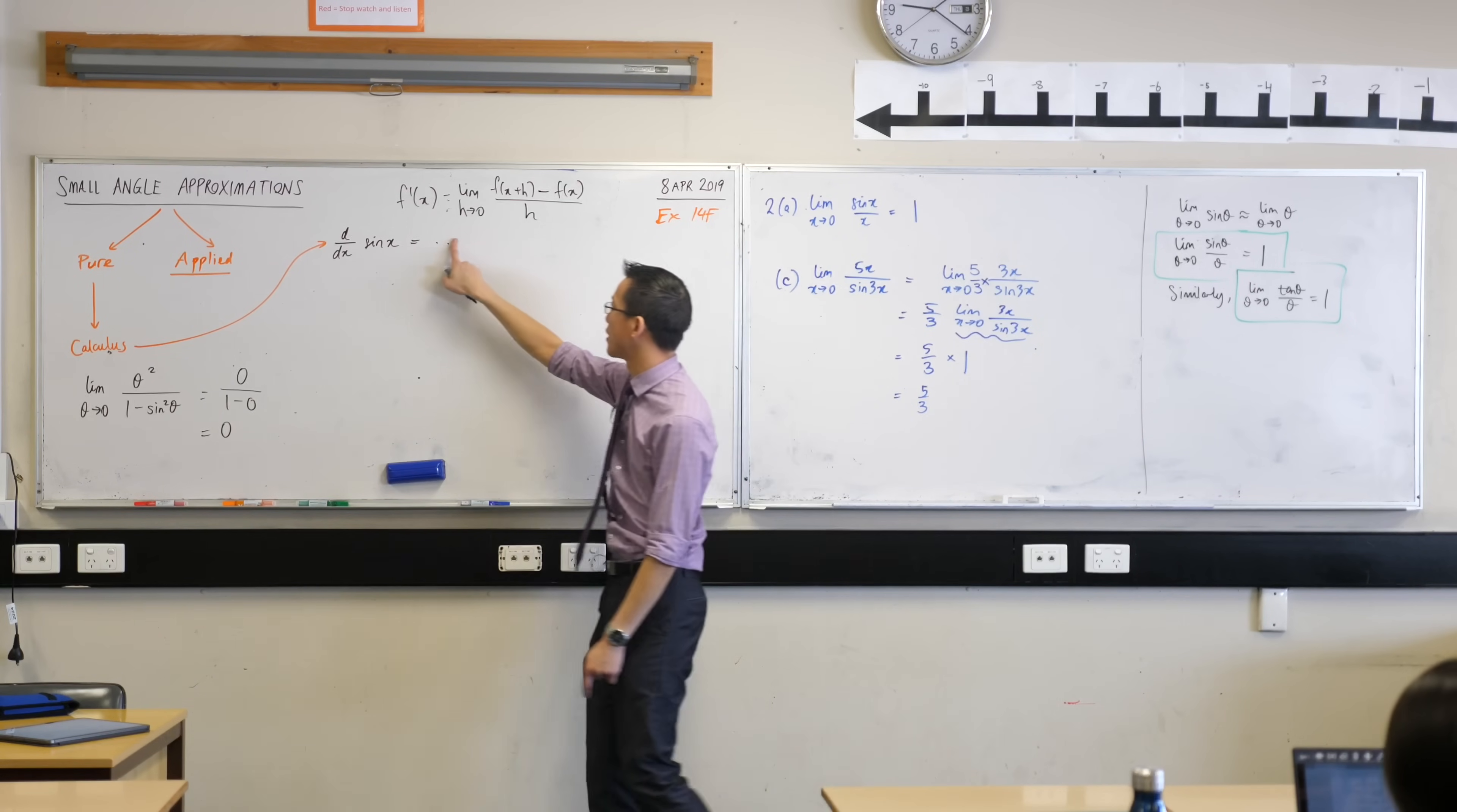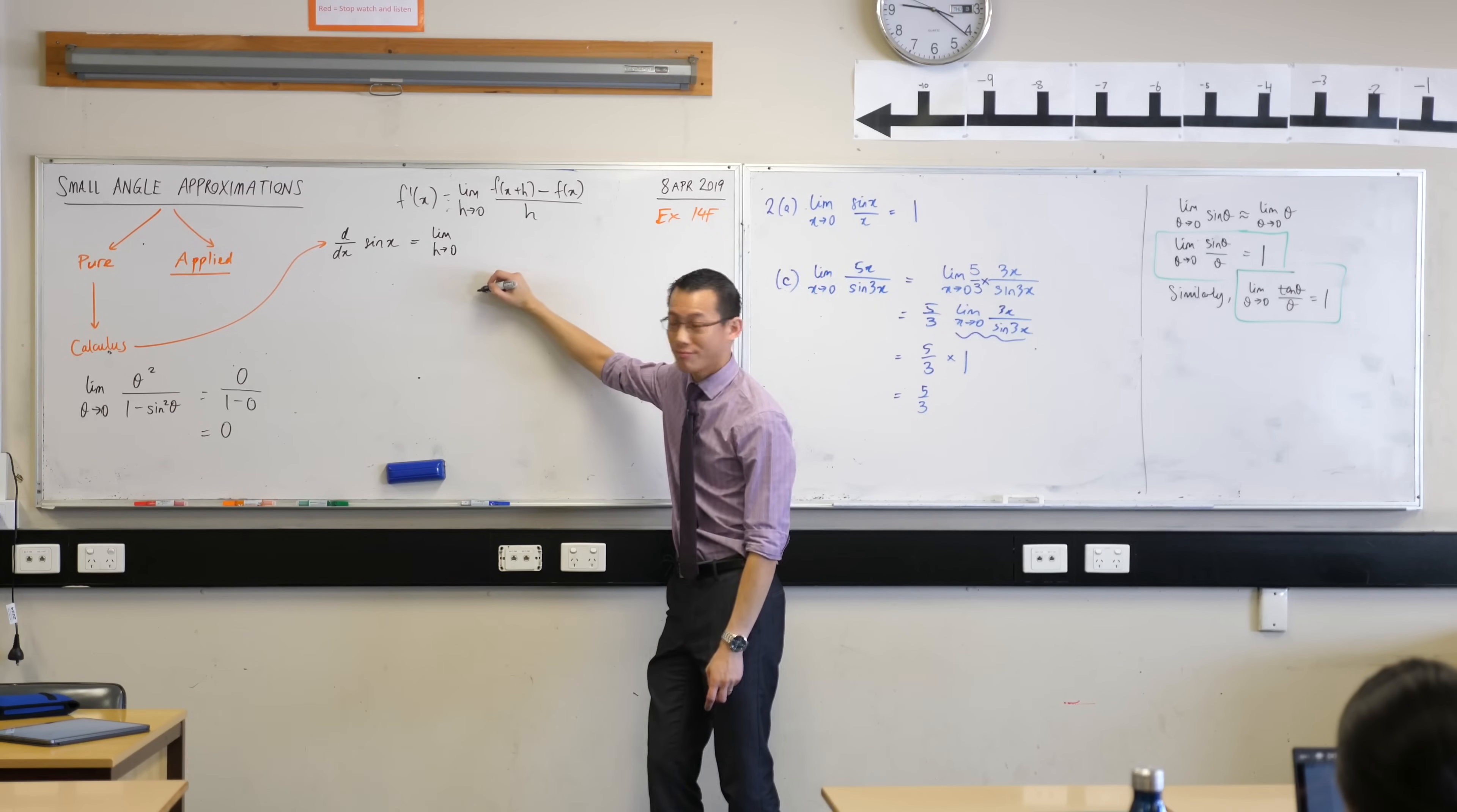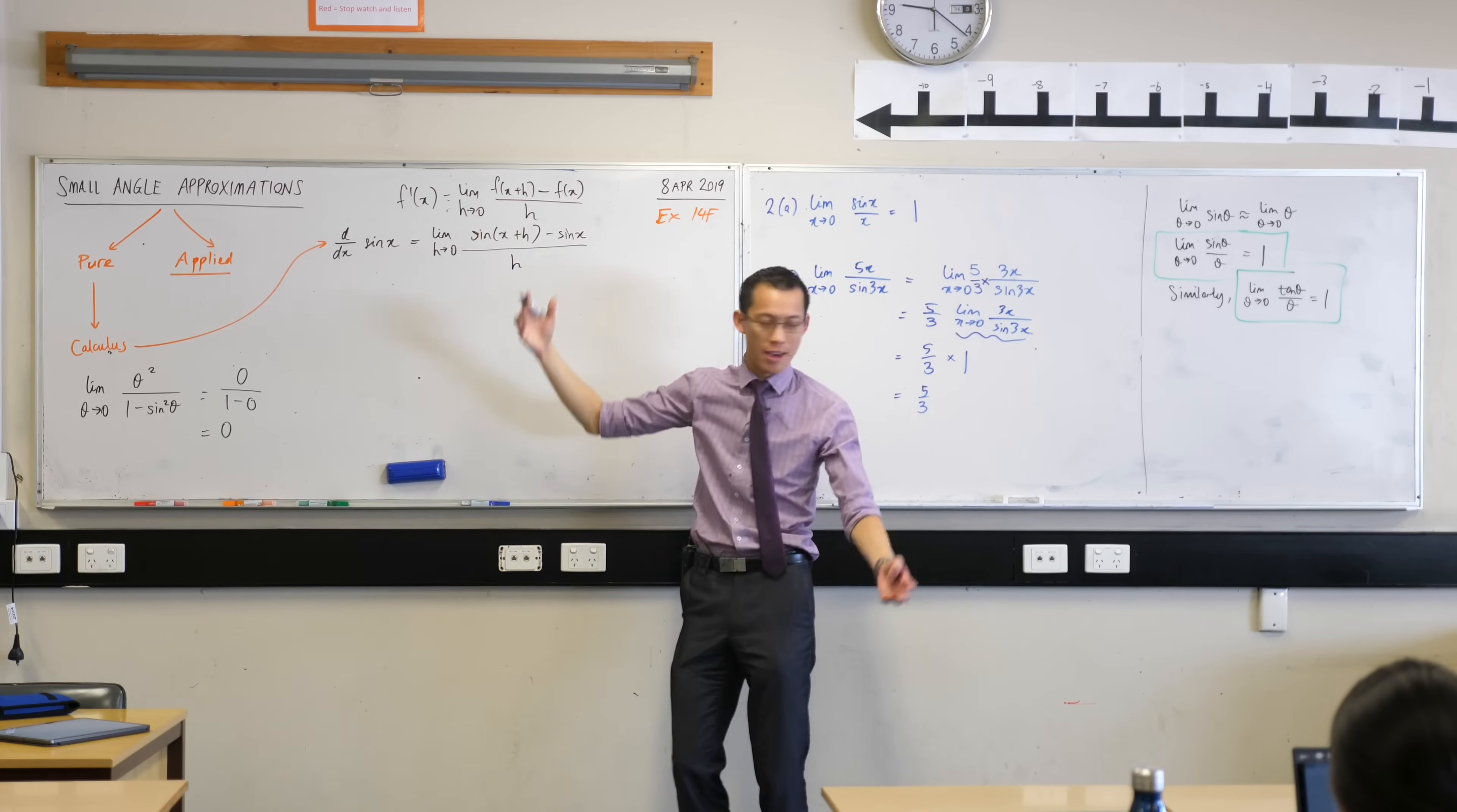Now, in this case, and this is the part we're going to need to work together, in this case, my f is just sine. So this is what I get. The limit as h approaches zero of sine of x plus h. That's just my f of x plus h. Minus what? Minus sine. And then on the denominator, it's still just my h. There's nothing there, okay?